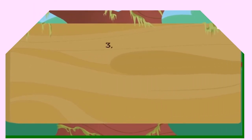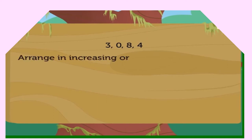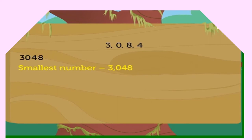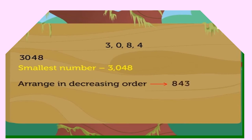Look at the digits 3, 0, 8, 4. To form the smallest number, we arrange them as 0, 3, 4, 8. But this makes it a 3-digit number. Therefore, we interchange the positions of the first two digits — 0 and 3 — to get the smallest number: 3, 0, 4, 8. So the smallest number is 3,048. Now, to form the greatest number, we arrange them as 8, 4, 3, 0. Thus we get the greatest number as 8,430.